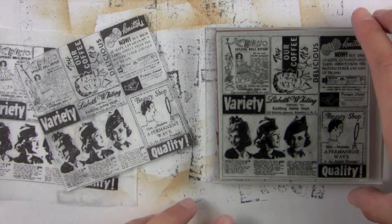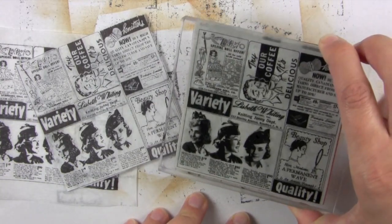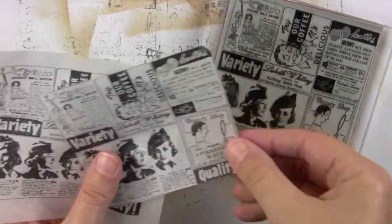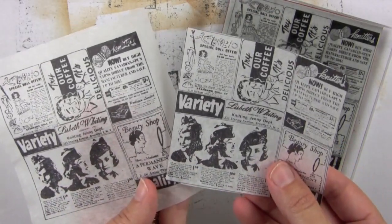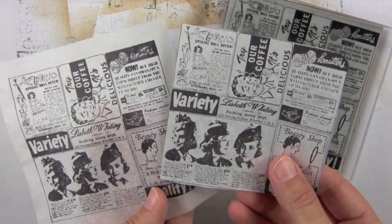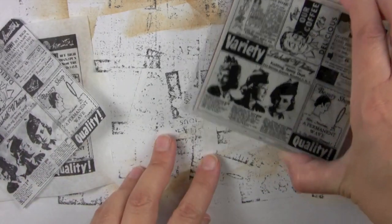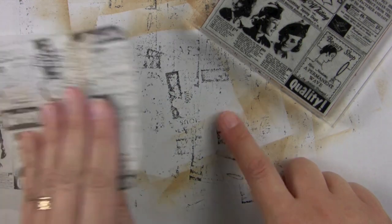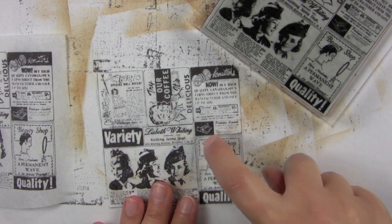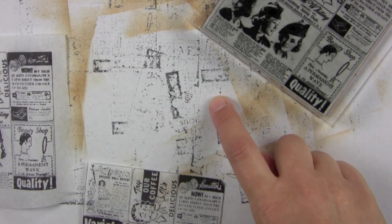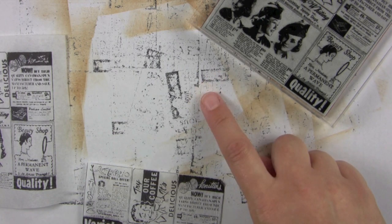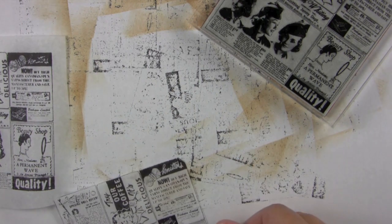So to get started I went ahead and stamped the cling variety and quality stamp on white tissue paper, and I did this because you're going to want to let this dry. You're going to want to stamp this on scrap paper because when you stamp on the tissue paper the ink will leak through to whatever surface you're stamping on, so you definitely use scrap paper for this.